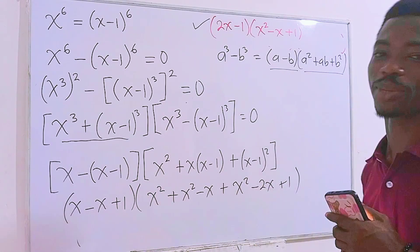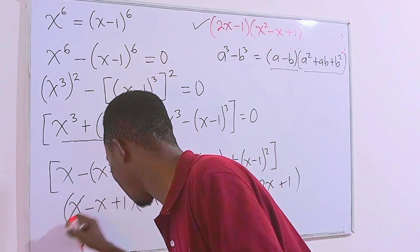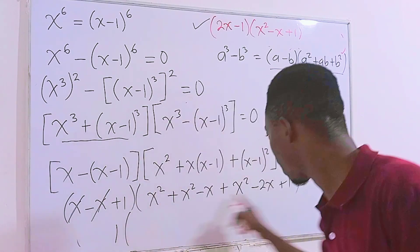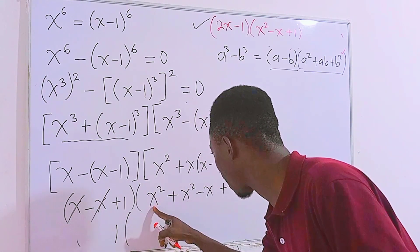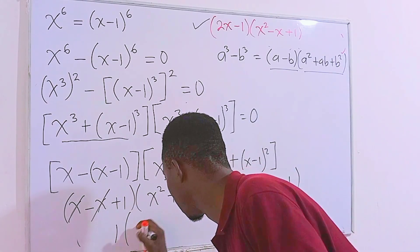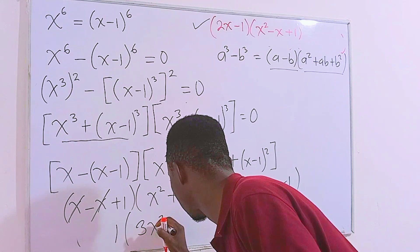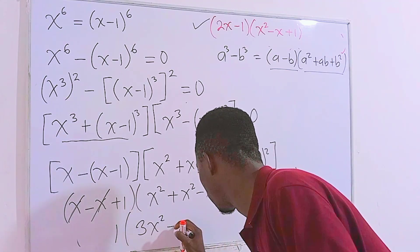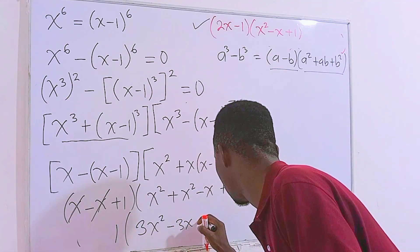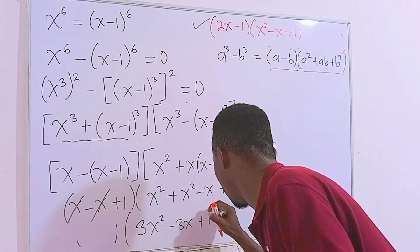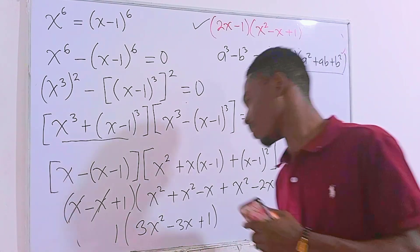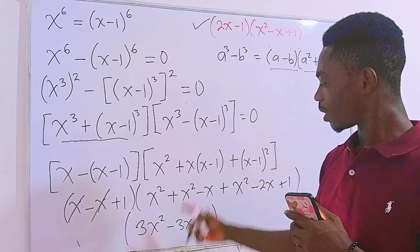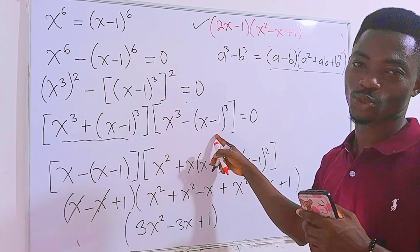Now simplifying: those terms will cancel. We have x squared, x squared, x squared — that is 3x squared. Then minus x minus 2x, that is minus 3x. Then plus 1. And since 1 times any number is the number itself, we get 3x² minus 3x plus 1. So that is the factor for the second cubic expression.